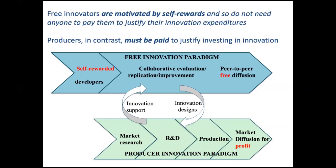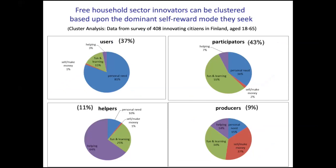The reason it's invisible is that these individuals develop innovations for themselves - no one pays them, so there's no transaction to trace. They don't patent, so there are no patents to trace. And they give away the innovations, so there are no sales to trace. It takes this kind of analysis to find these people. So why do they innovate if nobody pays them?